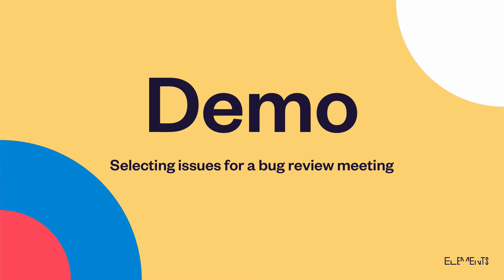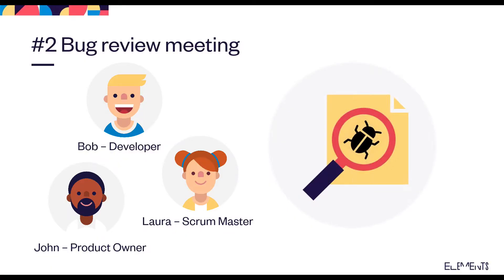We're going to show you how you can select and organize issues for a bug review or bug triage meeting. The goal of a bug review meeting is for the dev team to evaluate, prioritize, and assign the resolution of bugs.